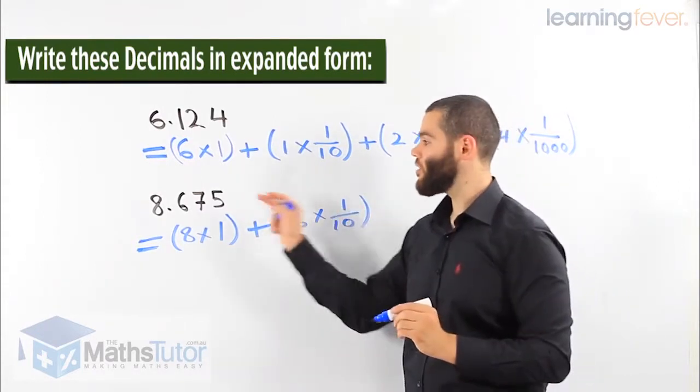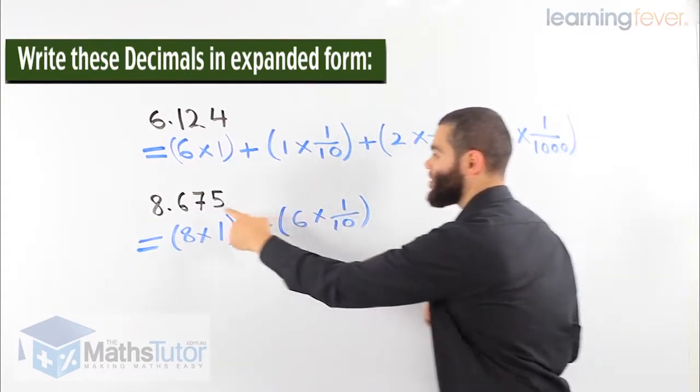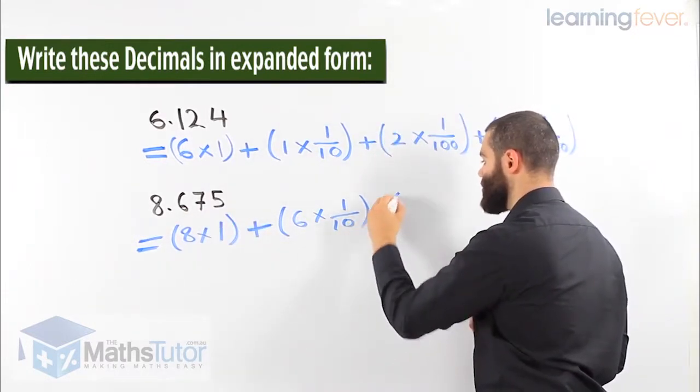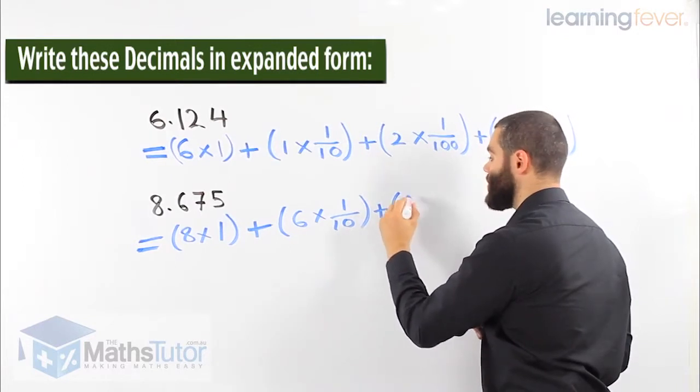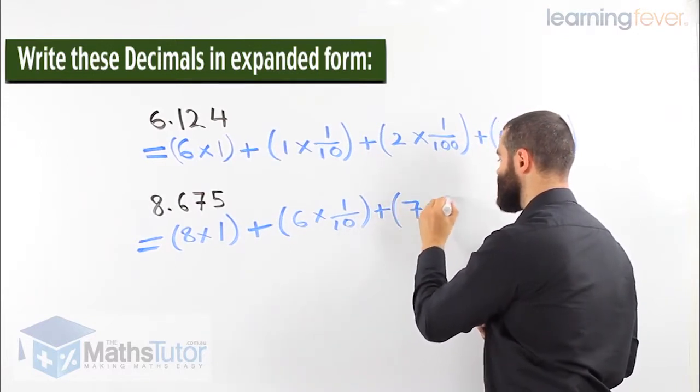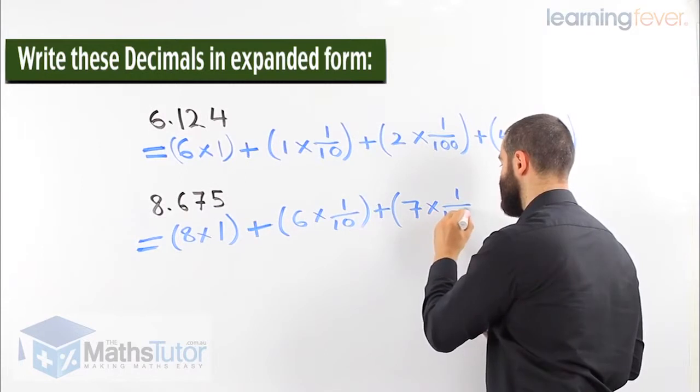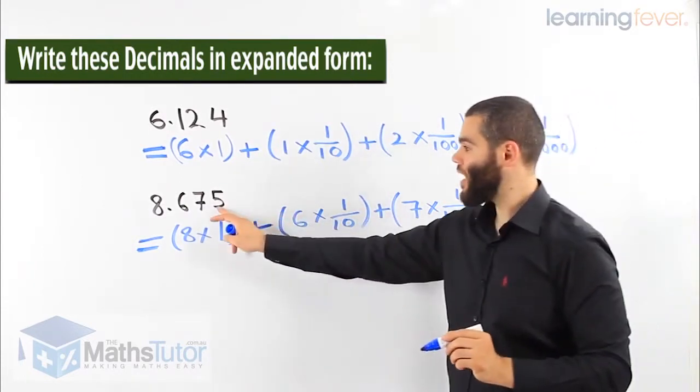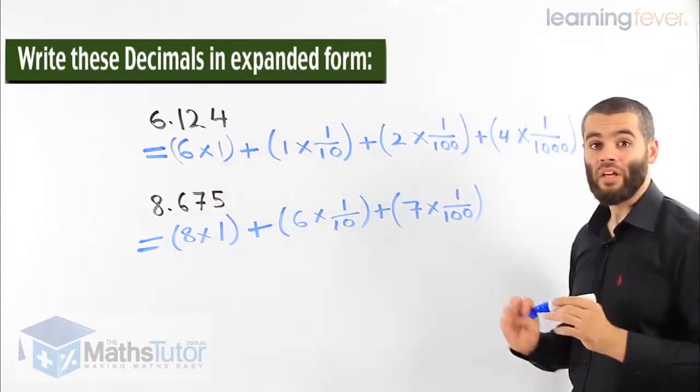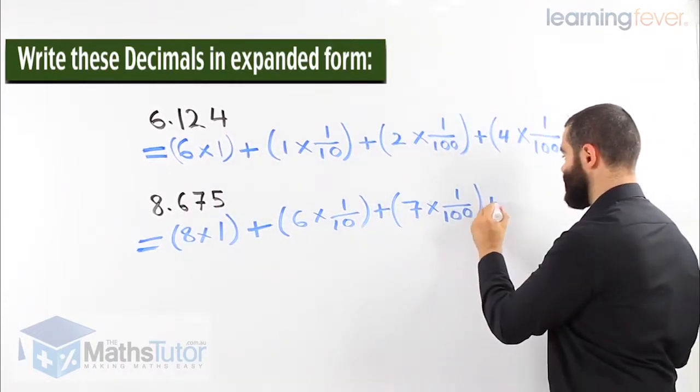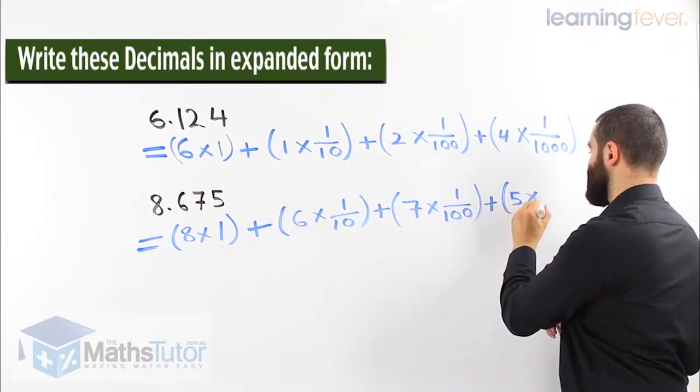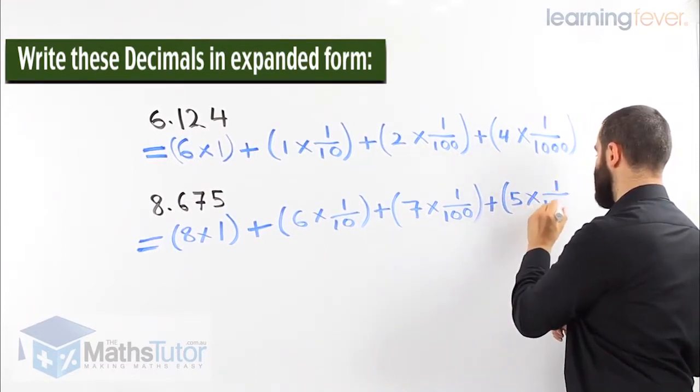Then I'm going to the hundredth column because it's a second number. So I know the second number means two zeros, which means 100, which is the 7 times 1/100. And I notice the third number after the point. Third number means three zeros, which is the 5 times 1/1000.